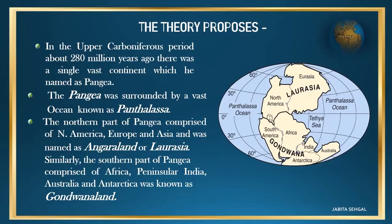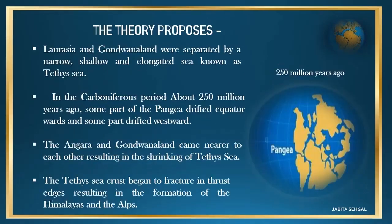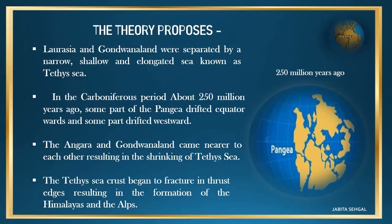Similarly, the southern part of Pangaea comprised of Africa, Peninsular India, Australia and Antarctica, and was known as Gondwana Land. Laurasia and Gondwana Land were separated by a narrow, shallow and elongated sea known as the Tethys Sea. In the Carboniferous period, about 250 million years ago, some part of the Pangaea drifted equatorwards and some part drifted westwards, and the Angara and Gondwana Land came nearer to each other, resulting in the shrinking of the Tethys Sea.